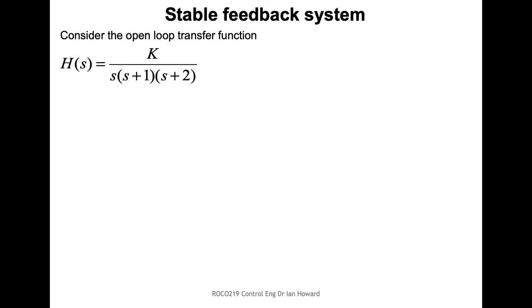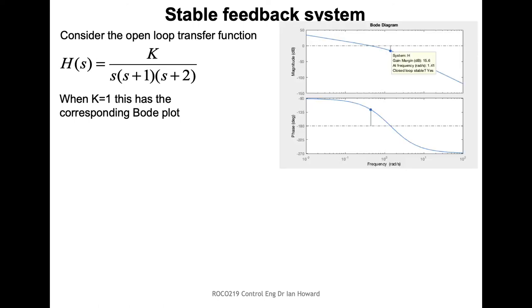Let's think about a simple transfer function and where the poles are. Setting the gain K to one, we can look at the Bode plot of this system. This is just a feedforward transfer function — imagine now we use unity negative feedback. We can ask: can we add more gain to the system such that it all goes unstable? And the answer is yes, we can.